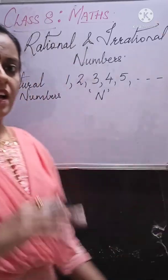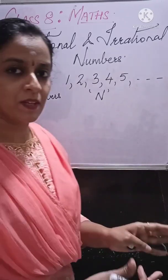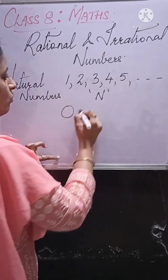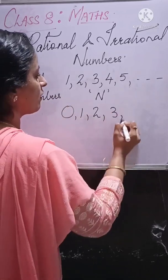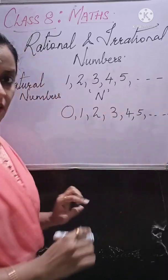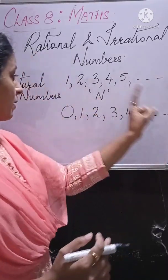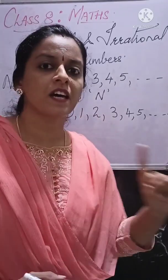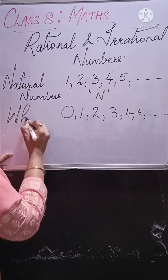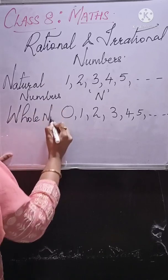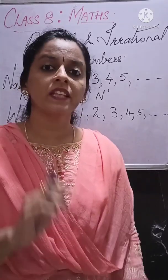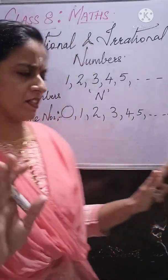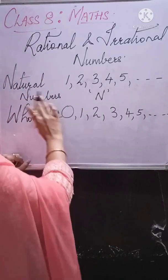After natural numbers, the next type of numbers — if you begin with 0, 1, 2, 3, 4, 5 and so on, only positive numbers — such a set of numbers is called Whole Numbers. Whole numbers start with 0, and natural numbers start with 1. That is the only difference.